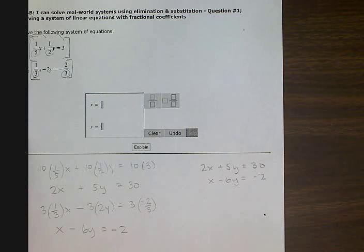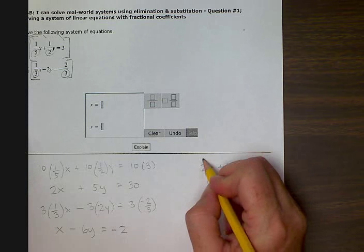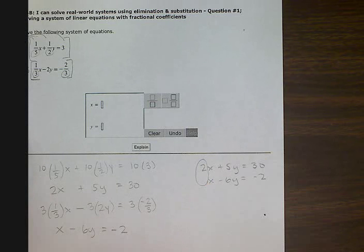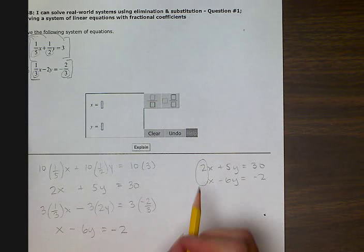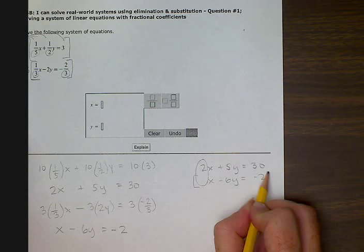Now to use elimination, I want these numbers to be the same but with an opposite sign. So in order for me to get a negative two in front of this x, I have to multiply this whole line, the bottom row, by negative two.